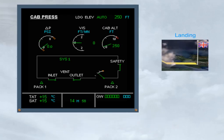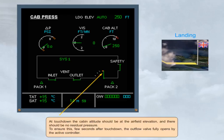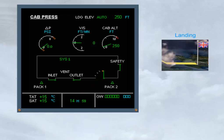At touchdown, the cabin altitude should be at the airfield elevation, and there should be no residual pressure. To ensure this, a few seconds after touchdown, the outflow valve fully opens by the active controller. A few seconds after the outflow valve is fully open, an automatic changeover of the system controllers occurs in preparation for the next flight. This happens so that both systems are used equally.